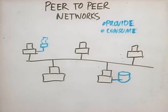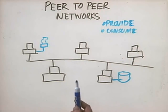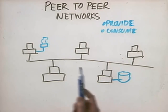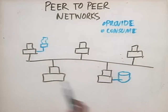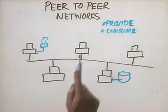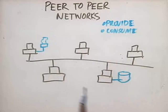Now, there are some drawbacks to a peer-to-peer network. It's so easy to implement and so inexpensive — why don't more companies use it? Well, there are some key problems. First of all, a peer-to-peer network is not very scalable. The bigger it gets, the harder it is to manage and keep running. Peer-to-peer networks are very difficult to support because they lack centralized control. There's not one network administrator running the show — every user at each workstation is kind of their own little network administrator.